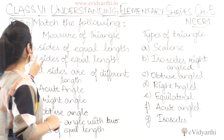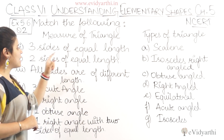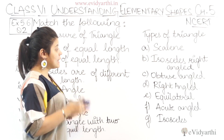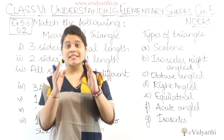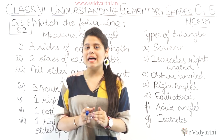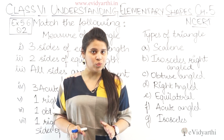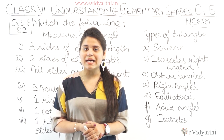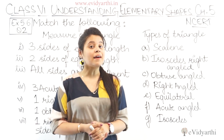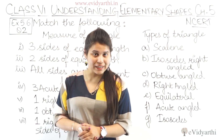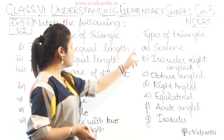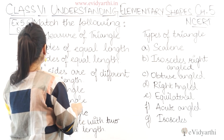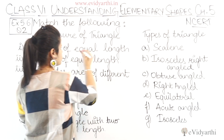The first one is three sides of equal length. This is a triangle in which three sides are equal. So which triangle has three equal sides? Equilateral triangle. So here equilateral triangle is the E part.